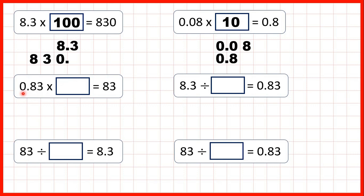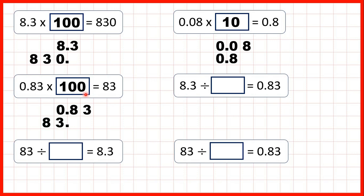Now we have 0.83 and we've multiplied to make 83. We write 83 with the decimal point on the end so the decimal points are lined up, which means our 10s, 1s, 10ths and 100ths place value columns are in the right place. Here we can see that the digits have moved two squares, which means we've multiplied by 100.